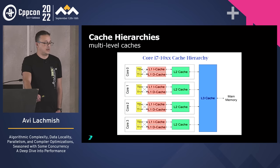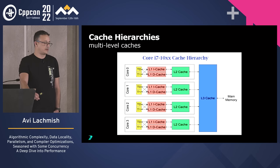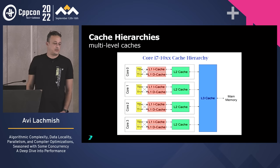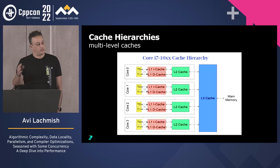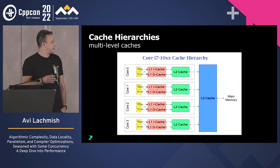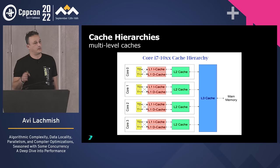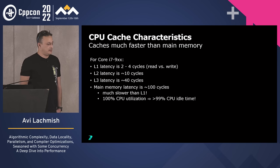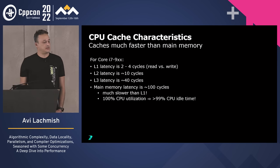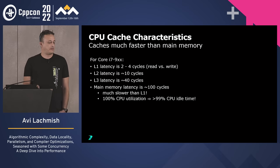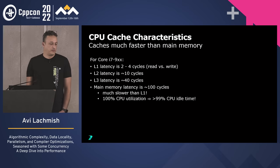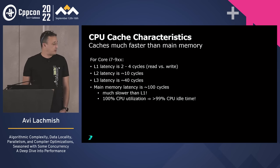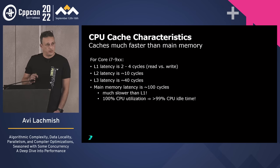Each processor core has two main threads. Each thread can access the L1 instruction cache and L1 data cache. If it doesn't find the data there, it goes to L2, then L3, then main memory. The latency on my machine: L1 is 2–4 cycles depending on read or write, L2 is about 10 cycles, L3 is about 40 cycles, and main memory is about 100 cycles.